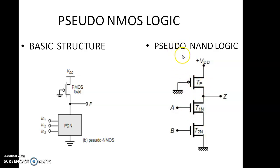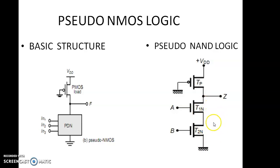If it is CDMO NOR, then A and B are connected in parallel. Any logic equations we can implement here.